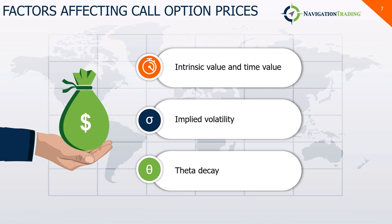Let's look at some factors that affect call option prices. First, intrinsic value and time value. Intrinsic value is the tangible value an option holds right now if you can exercise it profitably — typically the difference between the current market price of the underlying stock and the strike price. Time value is the additional value left over after intrinsic value, representing the probability that the option will become profitable before expiration. Both help investors determine if an option is fairly priced, overvalued, or undervalued.